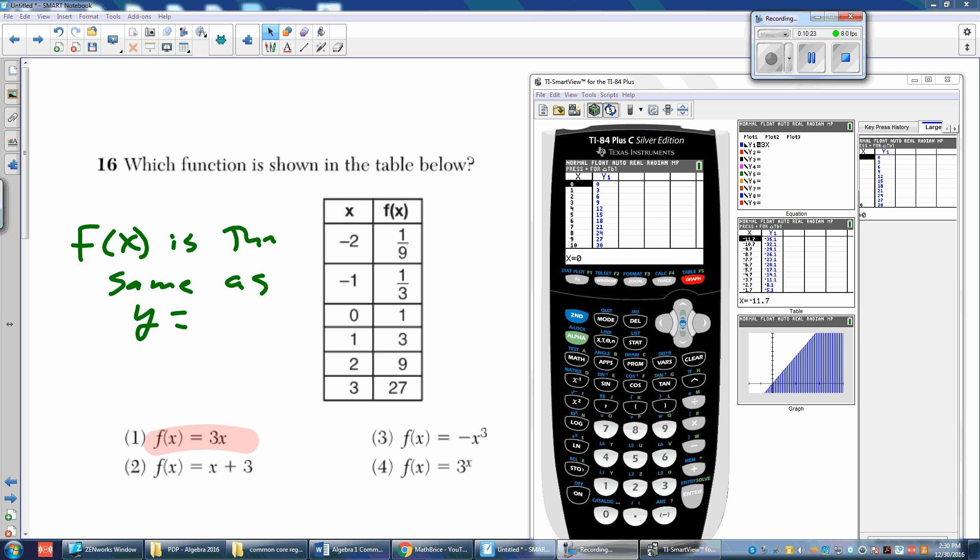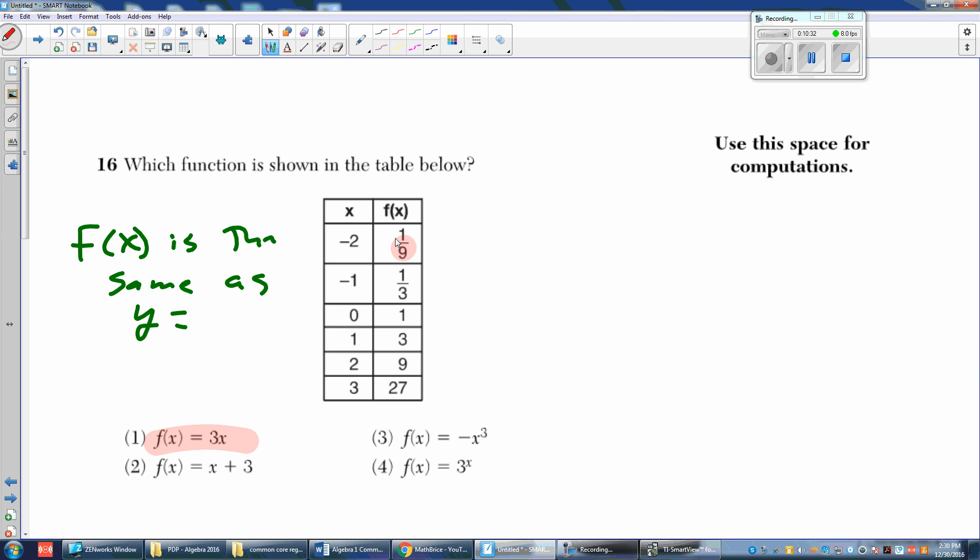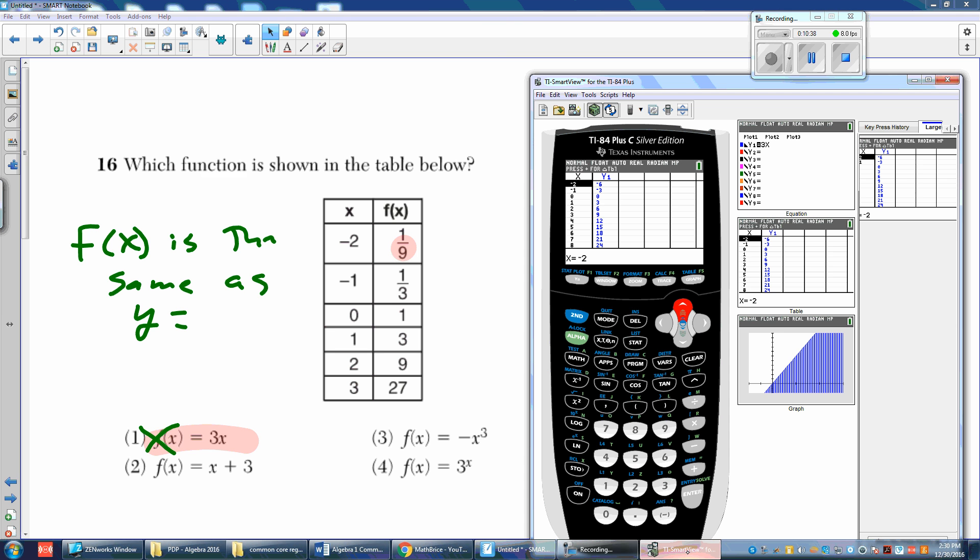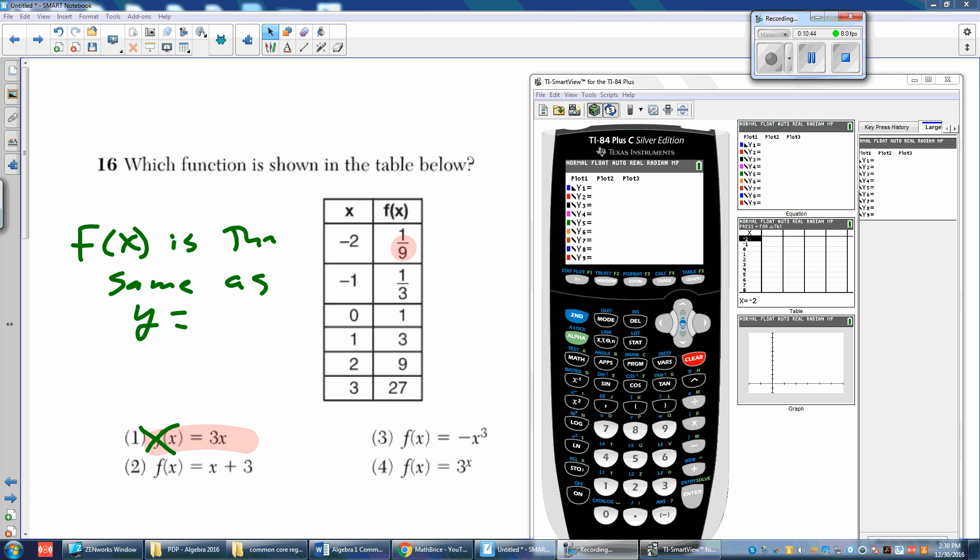Now notice that in the question it starts at negative 2, so I'm going to go up to negative 2, and the answer is negative 6. This is not negative 6, so that one is out. First one, wrong. I just go to Y equals, I hit clear, and I type in the next equation. I'm going to go to what I think is the right answer.